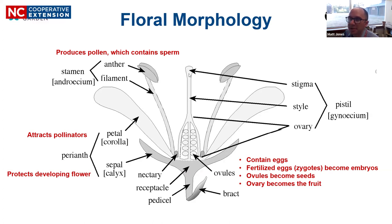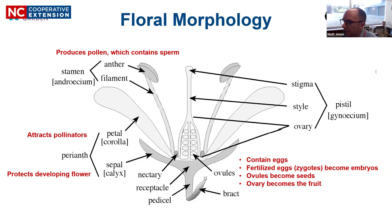When a pollen grain lands it germinates on the stigma, grows through the style into the ovary, finds an ovule, and the pollen tube deposits two sperm cells. When pollen lands on a flower it's called pollination; when the sperm cells are delivered to the egg that's called fertilization, just like with animals. Other structures to be aware of are nectaries — glands that produce nectar, a sugary water made from photosynthesis, willfully given up to attract pollinators. They can be at the base of petals, stamens, or on ovaries.